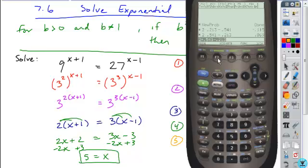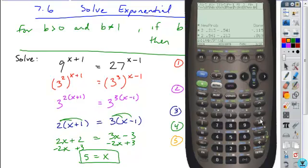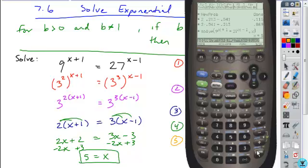Okay, but if we wanted to verify this, we could plug it into the solve feature of our calculator, enter it exactly as it appears, 9 to the power of x plus 1, set that equal to 27 to the power of x minus 1. Solve for x, and when we do, it confirms x equals 5 is our solution.